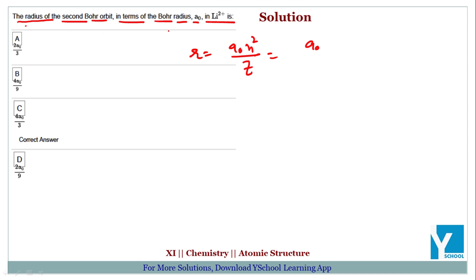For the second orbit, n equals 2, so n² equals 4. Lithium has z equal to 3. Therefore the answer is a₀ · 4/3, that is 4a₀/3.